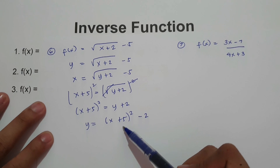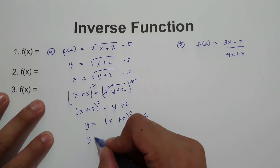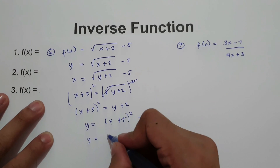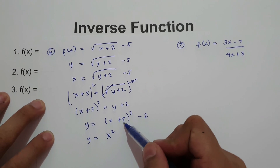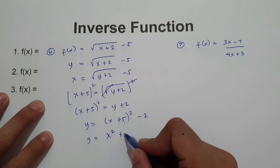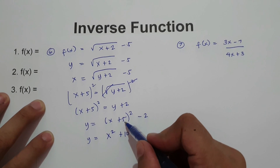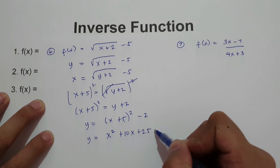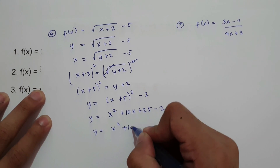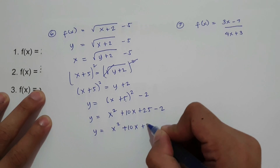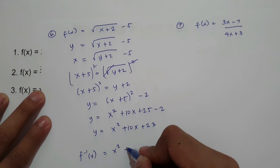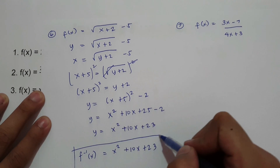We need to simplify x plus 5 squared. Square the first term: x times x is x squared. Multiply the first and second term by 2: x times 5 is 5x, times 2 is 10x. Square the last term: 5 squared is 25, minus 2. So we have y equals x squared plus 10x, and 25 minus 2 is 23. Therefore, the inverse of the function is x squared plus 10x plus 23.